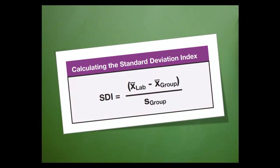Both the peer group mean and SD can be obtained from an interlaboratory comparison report. I encourage you to take a look at our videos for calculating the mean and SD if you'd like additional information.